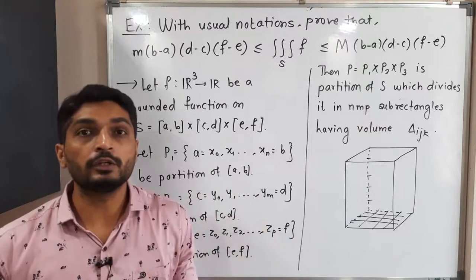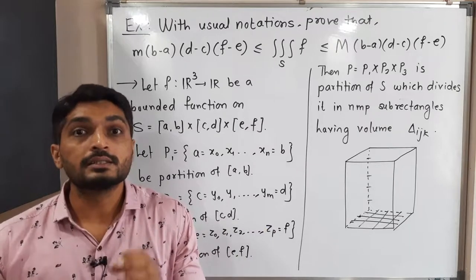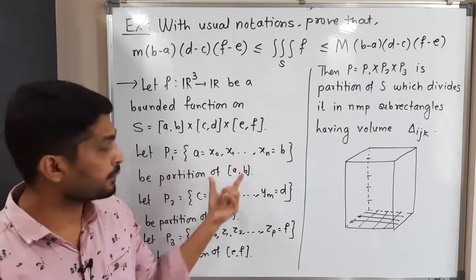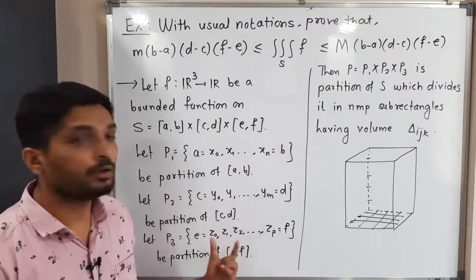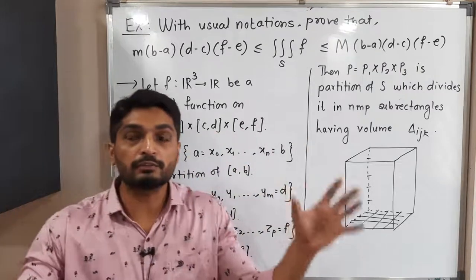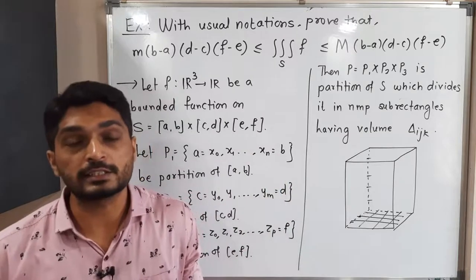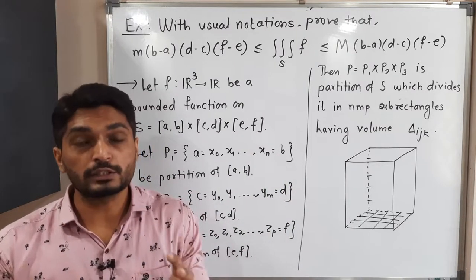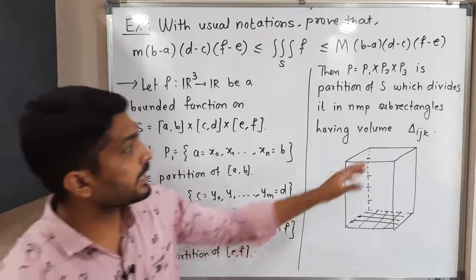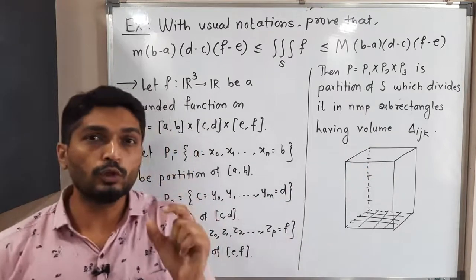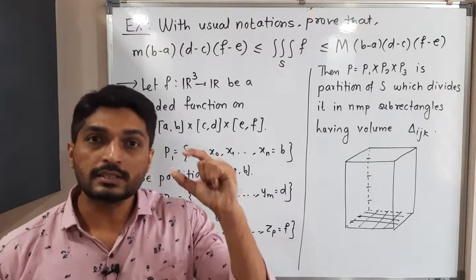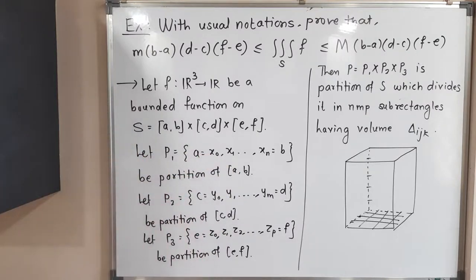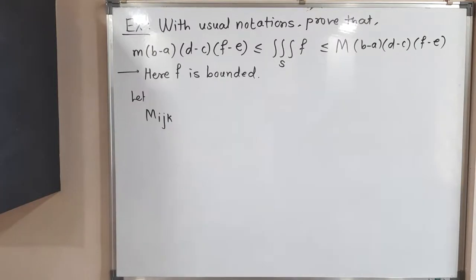If we take all three partitions combined, so P = P1 × P2 × P3, then this cuboid will be divided into n·m·p subcuboids — n partitions along x, m along y, and p along z. We consider Δ_ijk as the volume of each subcuboid.